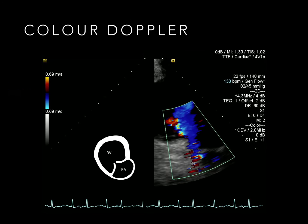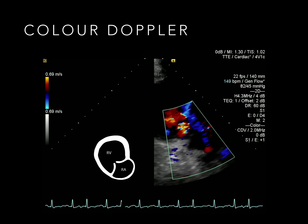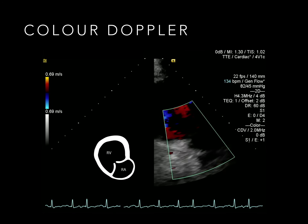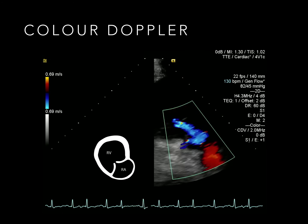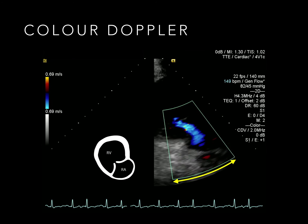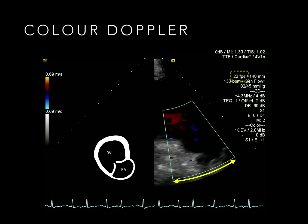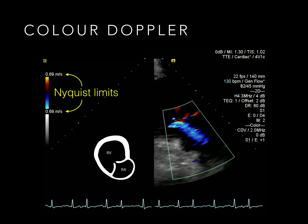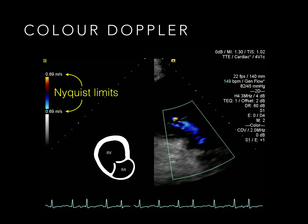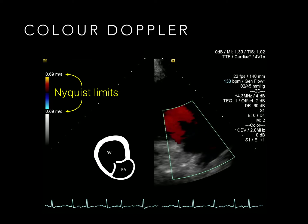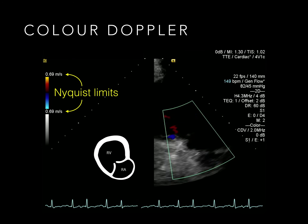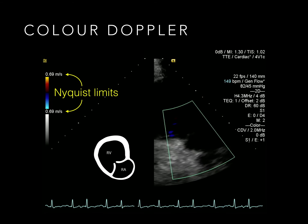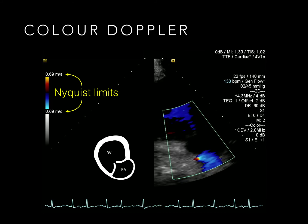There are a few controls we can use to get the best results. Narrowing the width of the colour box improves the frame rate. We can also set upper and lower limits called the Nyquist limits. For most purposes in echo, around 60 to 70 centimetres per second is appropriate. For low velocities, like through a big ASD or in a Doppler venous ultrasound, we need much lower velocities.